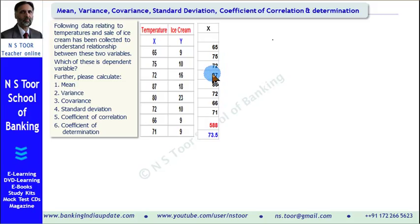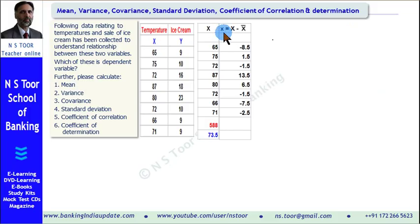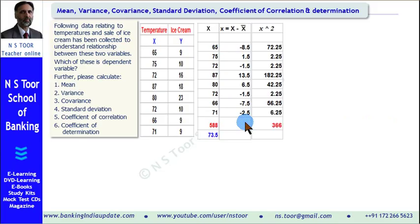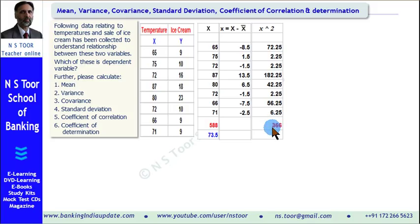After calculation of the mean, we shall calculate the deviation from the mean. Deviation in respect of x is represented by small x. Small x equals the value of X minus the mean. So 65 minus 73.5 gives us minus 8.5. This calculation is made for all observations. If we add them up, we get 0. Next, we square these values: minus 8.5 multiplied by minus 8.5 gives 72.25. We square all the items, and the total of all these is 366.